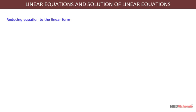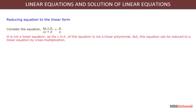Reducing equation to the linear form. Consider the equation AX plus B upon CX plus D equals to P upon Q. It is not a linear equation, as the LHS of this equation is not a linear polynomial. But, this equation can be reduced to a linear equation by cross multiplication.